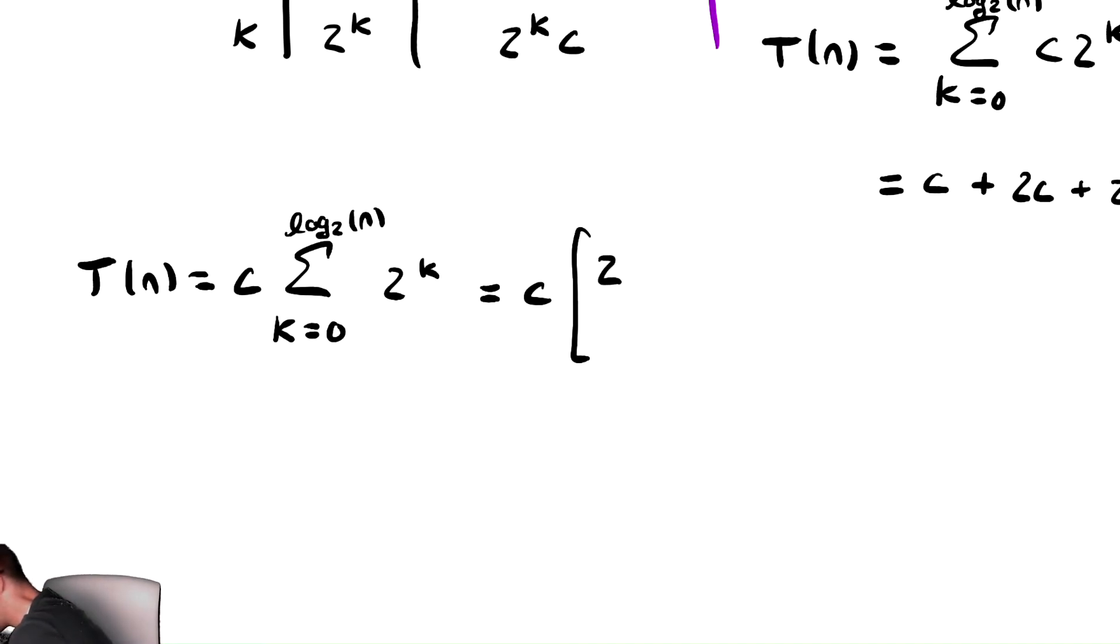We have a formula for this expression, which tells us that we can write a finite geometric sum as the common ratio, which is 2, raised to the top bound, plus 1, minus 1, all divided by 2 minus 1, the common ratio minus 1.